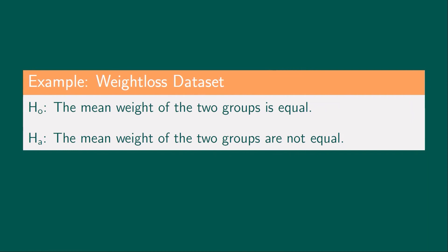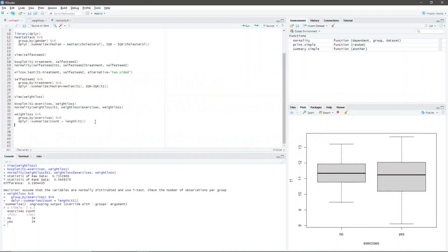The next step is to formulate the null and alternative hypothesis. The null hypothesis is that the mean weight of the two groups is equal, whereas the alternative hypothesis is that the mean weight of the two groups are not equal.